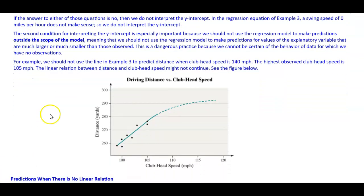For example, we should not use the line in Example 3 to predict distance when club head speed is 140 miles per hour. The highest observed club head speed is 105 miles per hour. The linear relation between distance and club head speed might not continue. So as this line continues and we get a higher and higher speed, it may turn into a non-linear situation. Therefore we have to be careful in that situation.